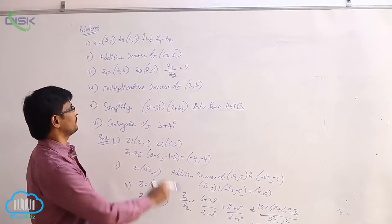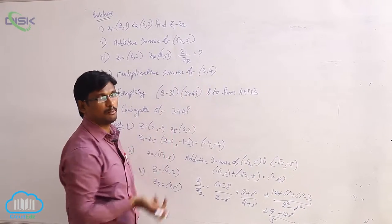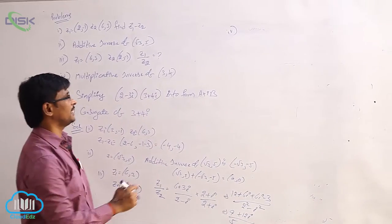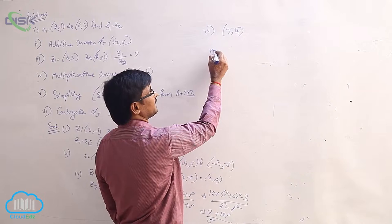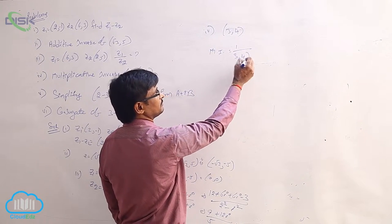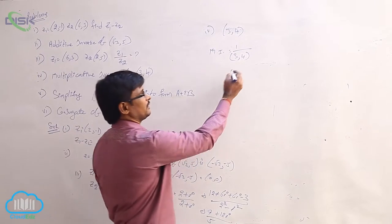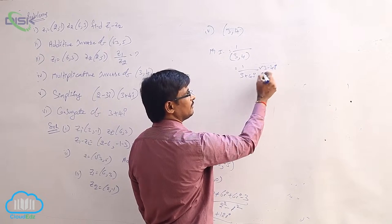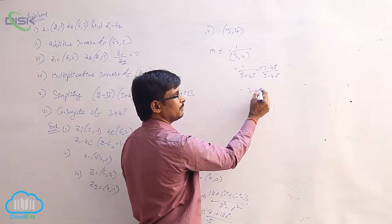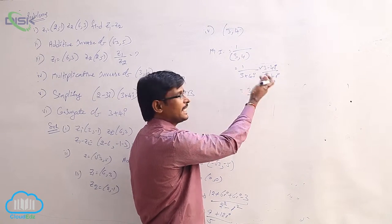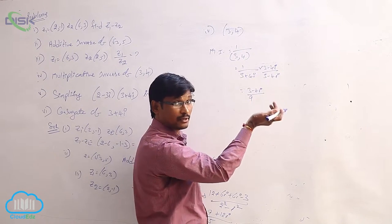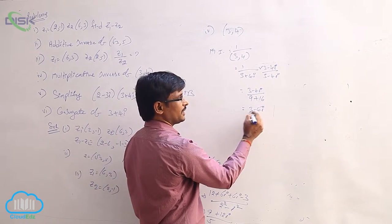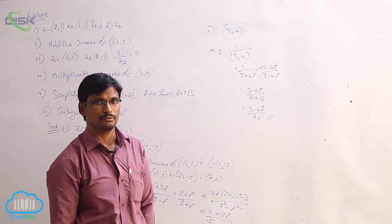The next problem asks for the multiplicative inverse of (3, 4). The multiplicative inverse is 1/(3 + 4i). Multiply and divide by the conjugate of the denominator, which is 3 − 4i. The denominator becomes a² − b² = 9 + 16 = 25 (since i² = −1 makes −16i² = +16). So the multiplicative inverse of (3, 4) is (3 − 4i)/25.